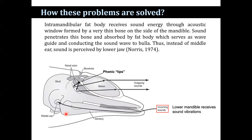The problem of sound energy transmission from water into body tissue is solved by the intramandibular fat body, which receives sound energy through an acoustic window — a very thin bone on the side of the mandible. Sound penetrates this bone and is absorbed by the fat body, which serves as a wave guide conducting the sound wave to the bulla. Thus, instead of the middle ear, sound is perceived by the lower jaw, as reported by Norris, 1974.